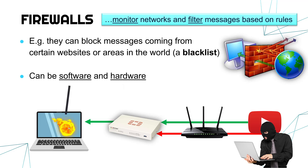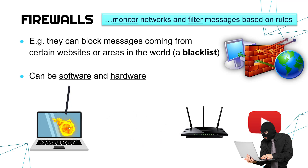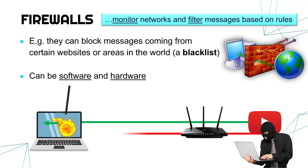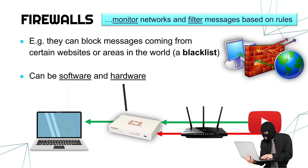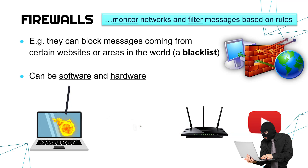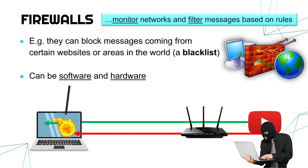With a software firewall, it's a little bit different. In this scenario, YouTube would still be allowed through. But the slight problem is the attacker's messages can reach your computer. The firewall should block these messages and prevent you doing anything with them, but unlike with a physical firewall, we don't have that barrier — if it's software, it's potentially not quite as good because the attacker can still reach your computer, though the firewall should still block it. This is why hardware firewalls are often a bit more effective and a bit more expensive, but they both block packets based on a set of rules.